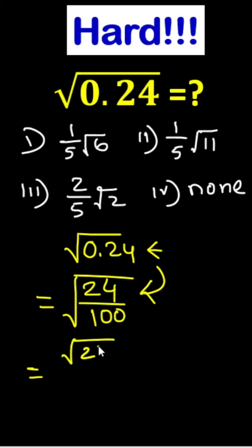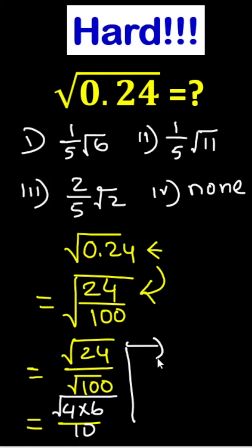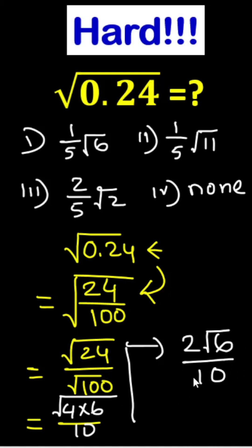We can write root 24 divided by root 100. Then root 24 can be written as root of 4 times 6, and root 100 means 10. Root 4 is 2, and 6 we cannot simplify, so we get 2 root 6 divided by 10.